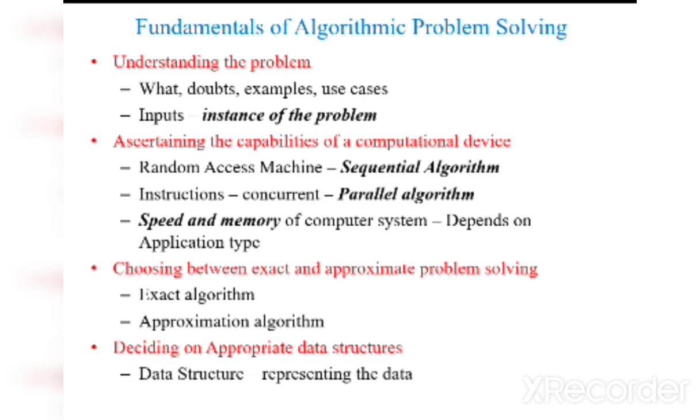In case of calculating the square root of a number, if we get an answer like 3.142222, we'll be rounding off the answer. In that type of problem, we are going to approximate the solution. Based on that, we'll be choosing between the exact algorithm or approximation algorithm.